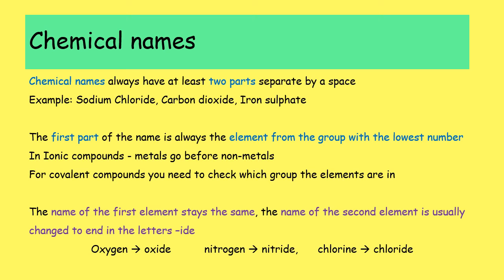When naming compounds, the name of the first element keeps its name, and the name of the second element is usually changed so that it ends with the letters IDE. So for example, oxygen becomes oxide, nitrogen becomes nitride, and chlorine becomes chloride. This applies in the majority of cases.